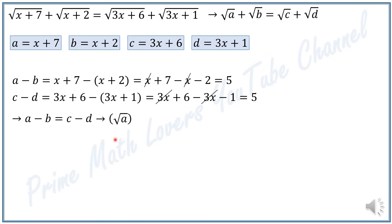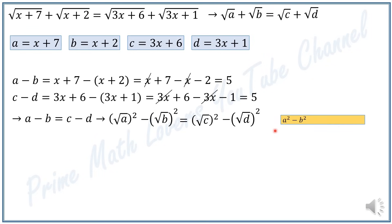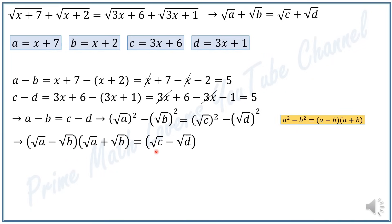I replace a with (√a)² and do the same with b, c, and d. So I have (√a)² − (√b)² = (√c)² − (√d)². Using the difference of squares identity — a² − b² = (a − b)(a + b) — I can apply this to both sides, giving (√a − √b)(√a + √b) = (√c − √d)(√c + √d). From our original equation, we know that √a + √b = √c + √d.